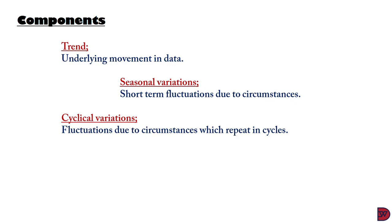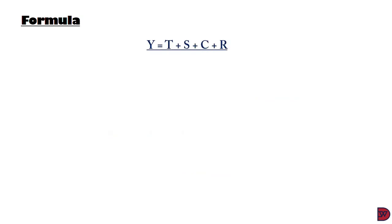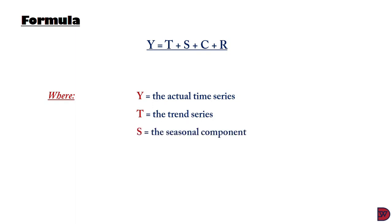The last component is residual variation. These are non-recurring random variations, which may be caused by unforeseen circumstances such as a change in government, a war, technological change, or a fire. Hence these are non-repetitive. The formula for time series is: Y = T + S + C + R, where Y is the actual time series, T is the trend, S is the seasonal component, C is the cyclical component, and R is the random component. We normally do not include the random component because of its non-repetitive and non-expected nature.